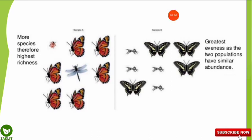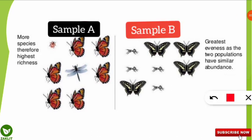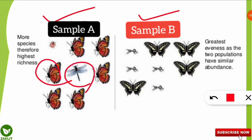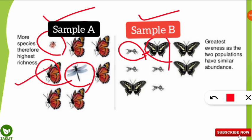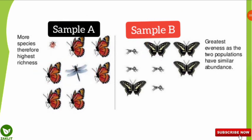With the help of this image we can understand these terms easily. On the left hand side we have sample A and on the right hand side we have sample B. Sample A shows more species richness than sample B because it contains more different kinds of species — butterfly, dragonfly, and beetle — whereas sample B has only ant and butterfly, just two different species, making it less species rich.